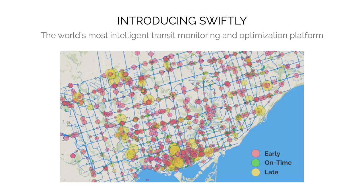I wish you could see this — it would normally be animated. But what this is is a live map of Toronto. Red bubbles are vehicles that are running early, ahead of schedule. Yellow bubbles are behind schedule, and green are on time. The size of the bubble corresponds to how early or how late the vehicle's running. We monitor transit networks in real time to do two core things: first, to help transit operators improve the operational performance of their network, and second, we have an algorithm that helps riders optimize how they get from A to B.